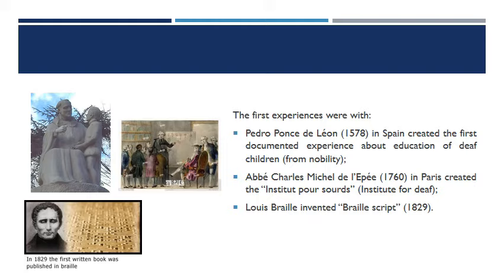Some of the early contributors include Pedro Ponce de Leon from Spain, who created the first documented experience about education for deaf children, serving as an educator for children who cannot hear. We also have Abbé Charles-Michel de l'Épée from Paris, who created the Institute for the Deaf. And then we have Louis Braille, who invented the Braille script — used by blind people to read and recognize letters of the alphabet.